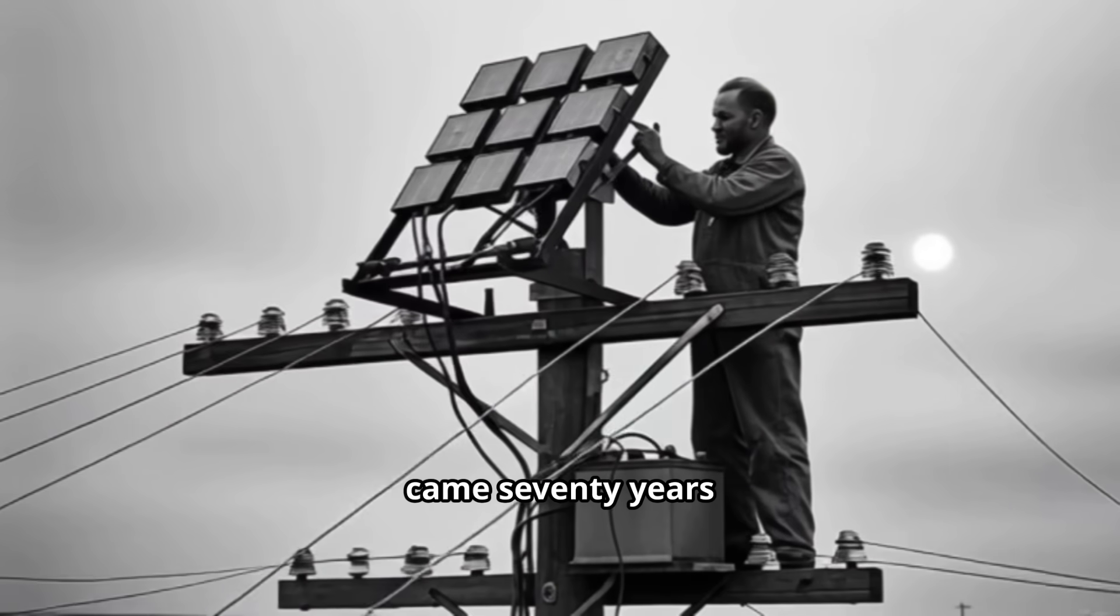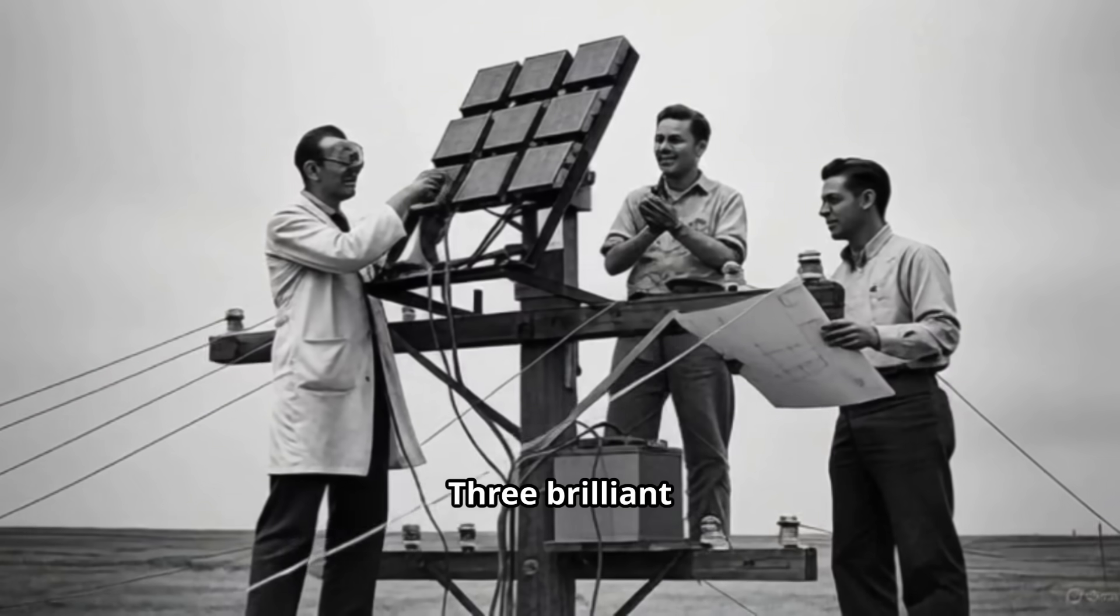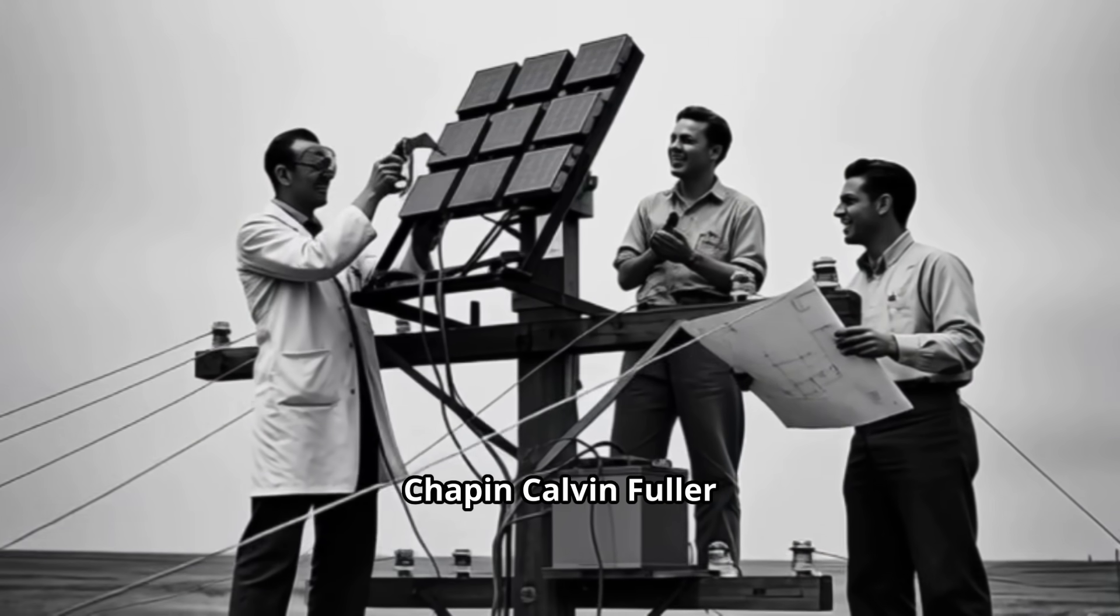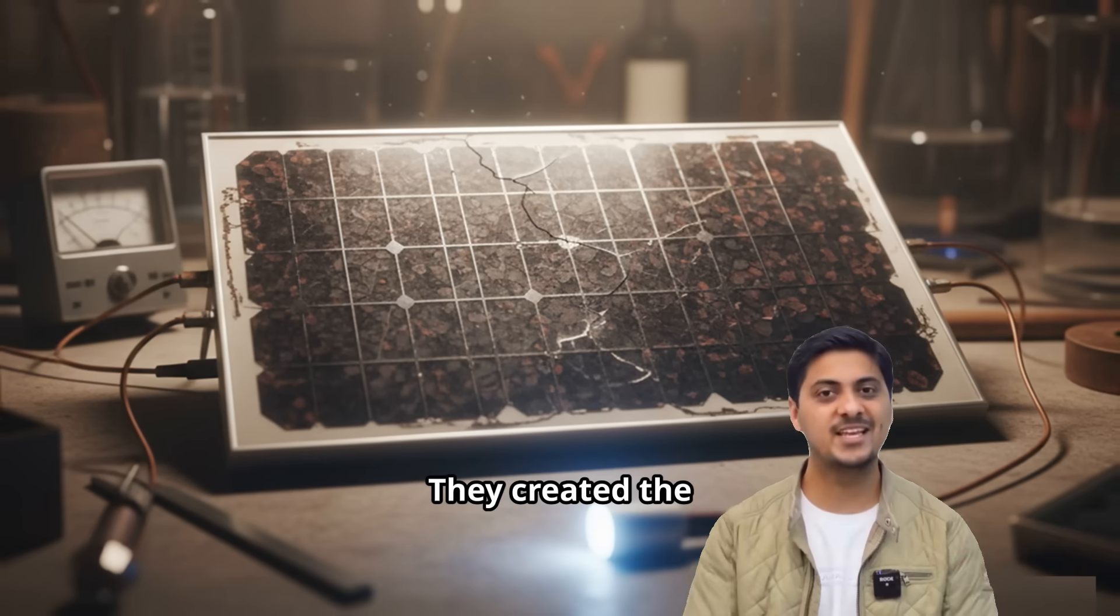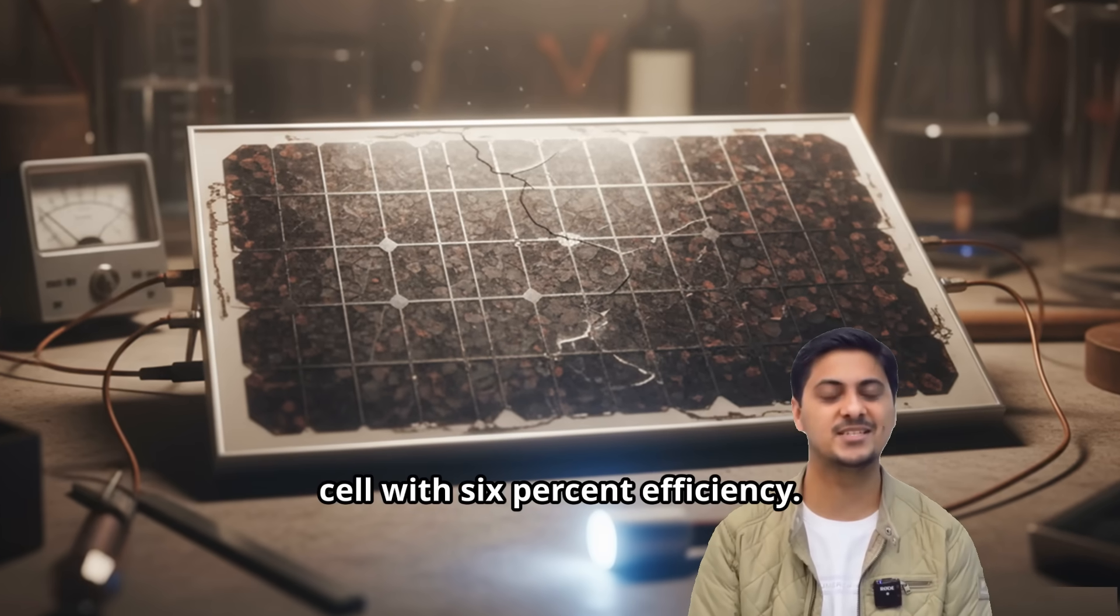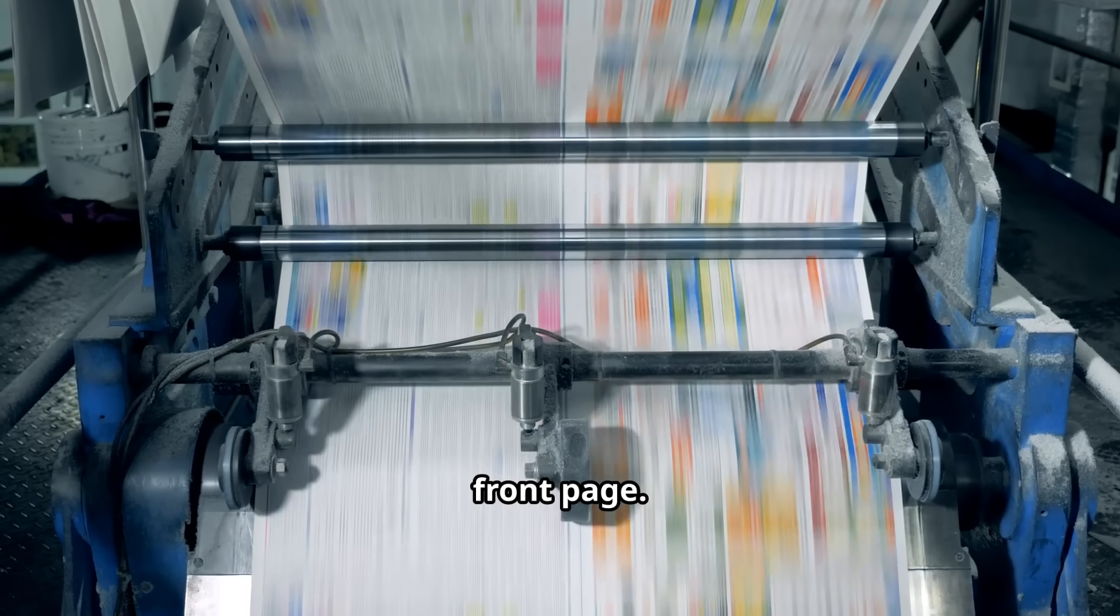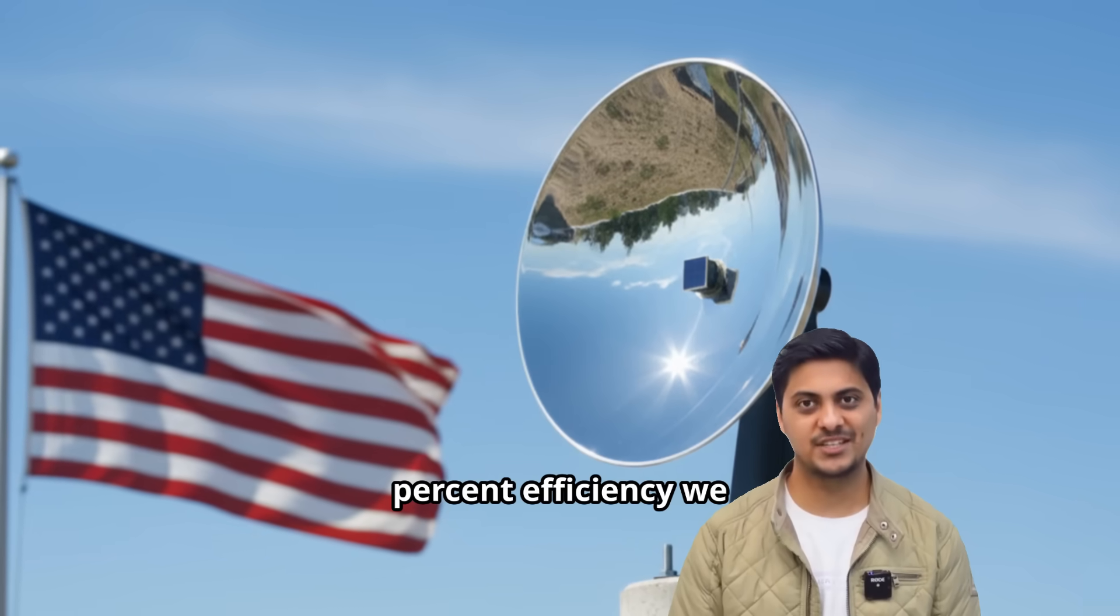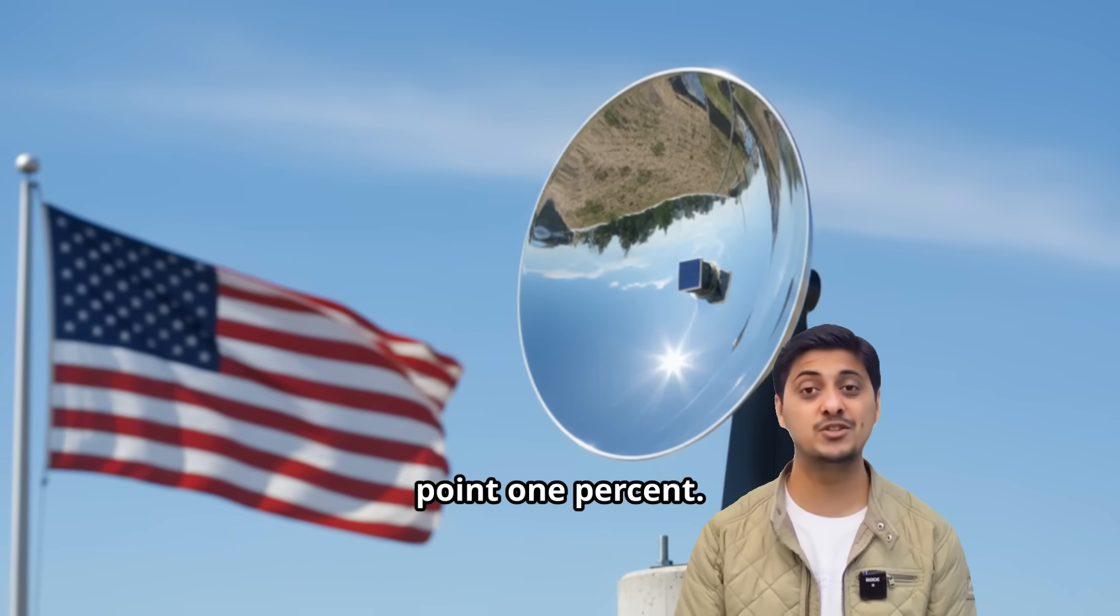The real breakthrough came 70 years later, in 1954, at Bell Laboratories. Three brilliant scientists, Daryl Chapin, Calvin Fuller, and Gerald Pearson, worked together tirelessly. They created the first practical silicon-based solar cell with 6% efficiency. The New York Times featured this breakthrough on its front page. From that humble 6% efficiency, we have now reached an incredible 47.1%.